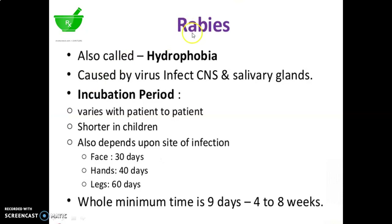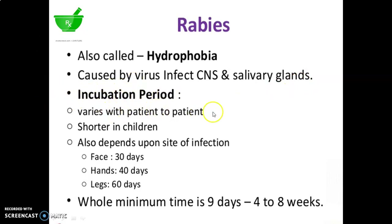First of all, let's see about Rabies, also called hydrophobia, caused by a virus that infects the CNS, that is the central nervous system, and salivary glands. The incubation period varies from patient to patient — shorter in children — and also depends upon the site of infection: for face 30 days, hands 40 days, legs 60 days; overall minimum time is 9 days to 4 to 8 weeks.